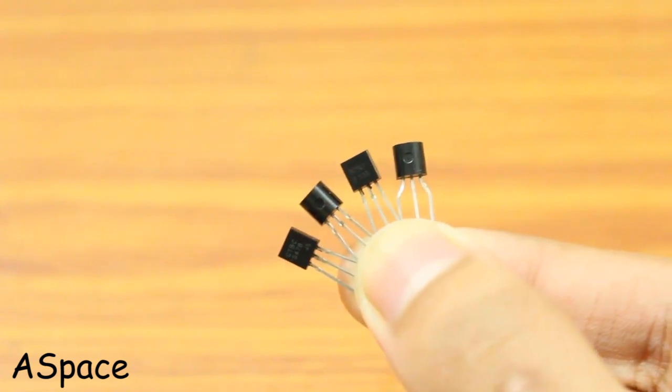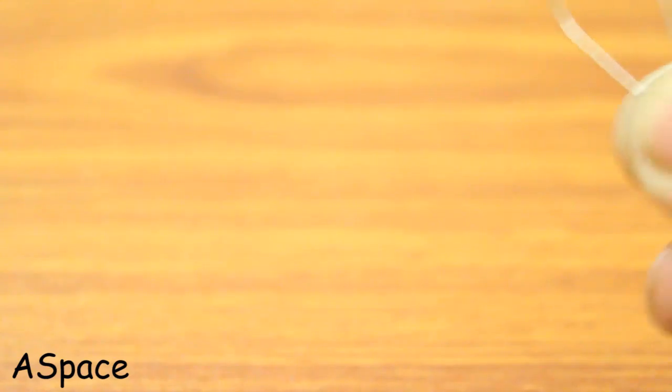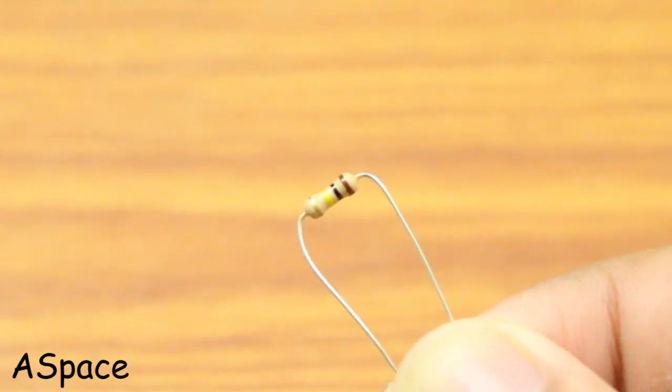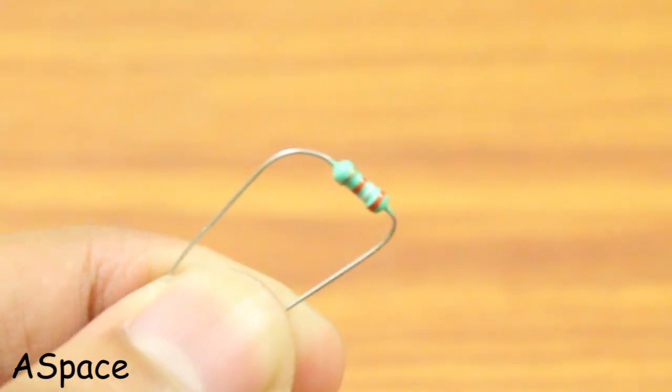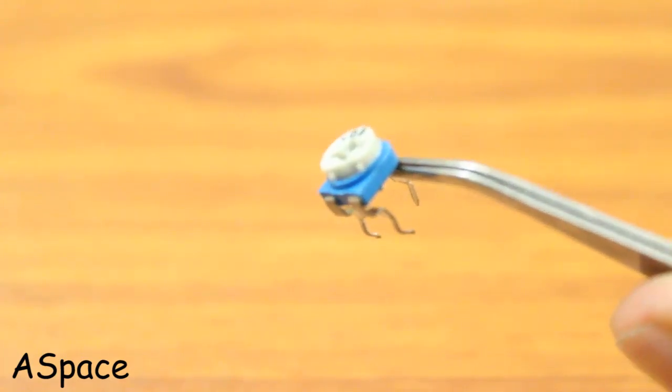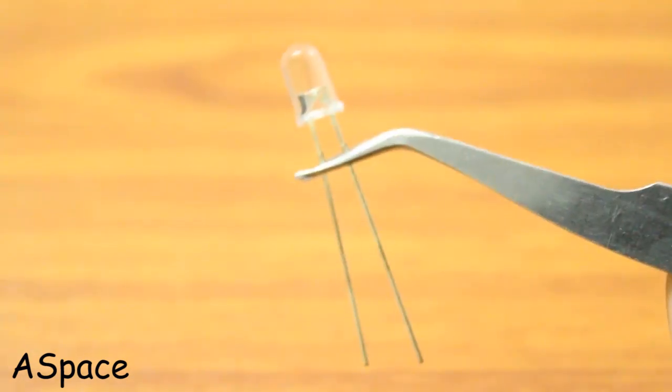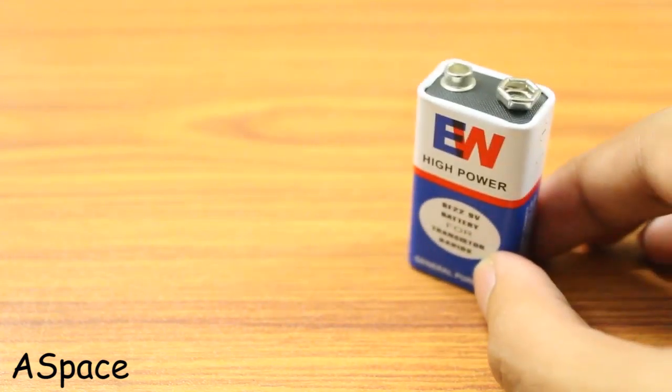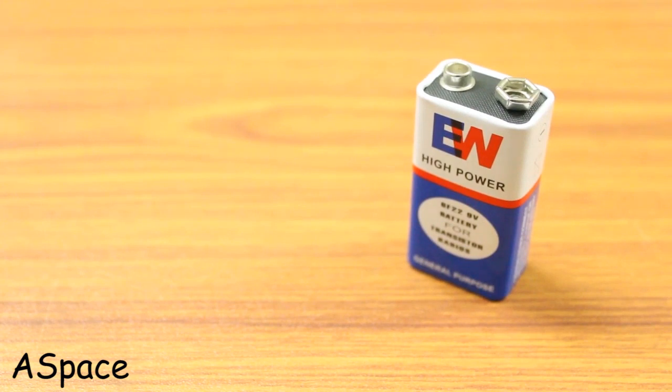All you need is four general purpose transistors. In my case, BC547, one megaohm resistor, 100 kiloohm resistor, 39 kiloohm resistor, one 5 kiloohm potentiometer, a 5mm red LED, a 9V battery since we want to make it portable, and a battery connector.